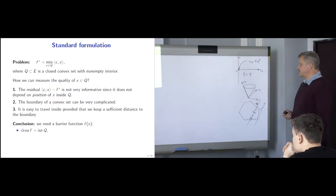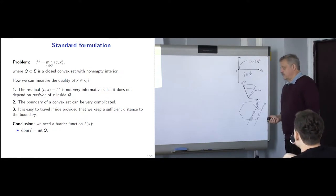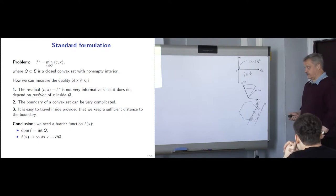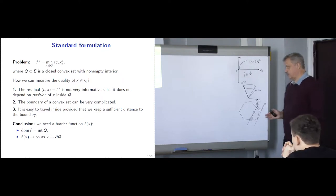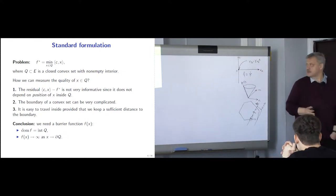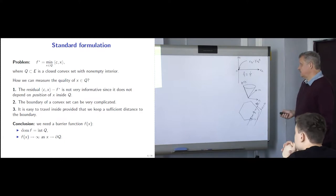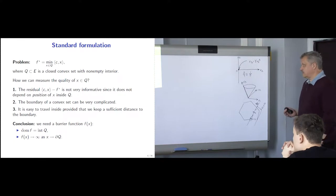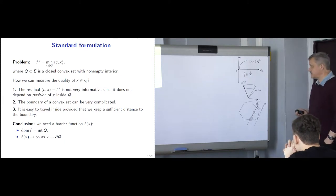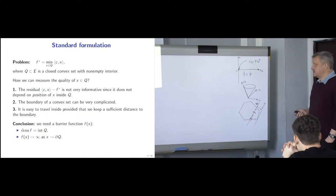A barrier function is defined on the interior of our domain and goes to infinity when x approaches the boundary of the set. This is a very old concept from the 1960s — a very natural idea. But at that time, people did not understand the importance of certain properties of this function that ensure good global complexity results. This was understood only at the end of the 1980s and beginning of the 1990s.